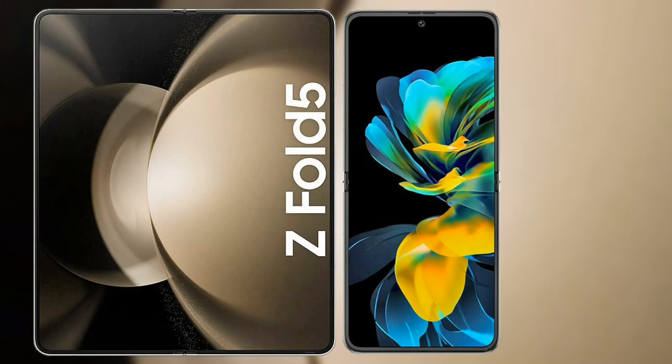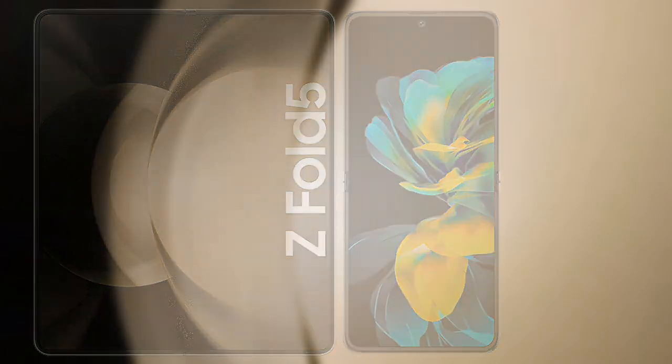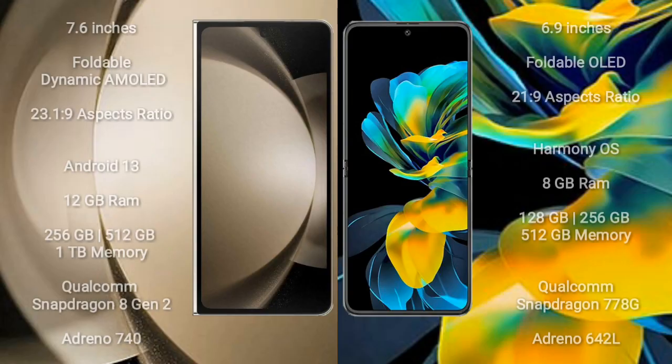I will compare the new Samsung Galaxy Z Fold 5 with Huawei Pocket Ace. Samsung Galaxy Z Fold 5 comes with a 7.6-inch foldable dynamic AMOLED display and aspect ratio 23:10:9. Huawei Pocket Ace has a 6.9-inch foldable OLED display and aspect ratio 21:9.